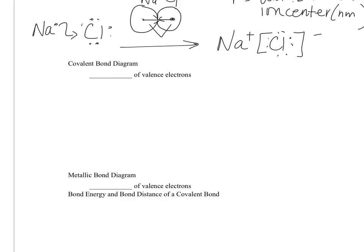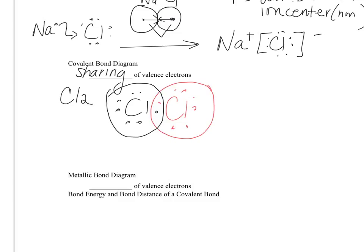Covalent bond diagram is a sharing of electrons. For example, if I have Cl2, a molecule of Cl2, I've got Cl with its seven, and then another Cl with its seven. This chlorine is happy with eight, and this chlorine is happy with eight, because they are sharing the two in the middle. We can also draw this as Cl-Cl, and you can see that the bond line in the middle represents the two electrons that are being shared.